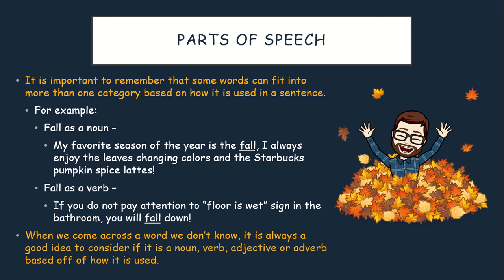In your parts of speech, it is important to remember that some words can fit into more than one category based on how they're used. For example, fall could be a noun: 'My favorite season of the year is the fall. I always enjoy the leaves changing colors in the fall.' Fall could also be a verb, though: 'If you do not pay attention to the floor is wet sign in the bathroom, you will fall down.' When we come across a word we don't know, it is always a good idea to consider if it's a noun, verb, adjective, or adverb based on how it's used. Ultimately, identifying the part of speech will help you understand new words as you come upon them.